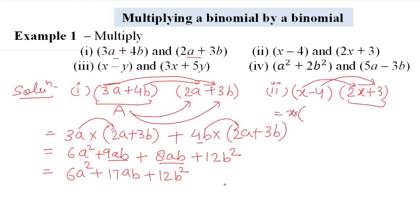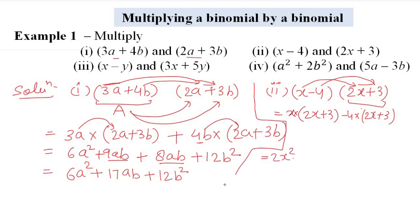x × 2x = 2x², x × 3 = 3x, -4 × 2x = -8x, -4 × 3 = -12. Combining like terms: 3x - 8x = -5x. The final answer is 2x² - 5x - 12.